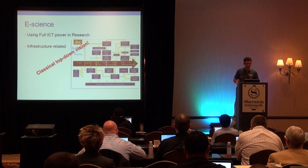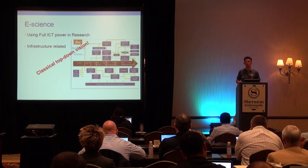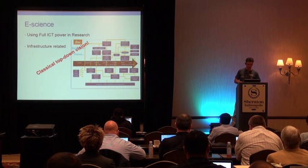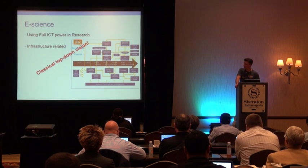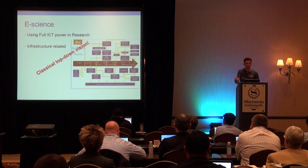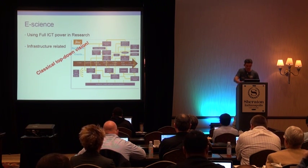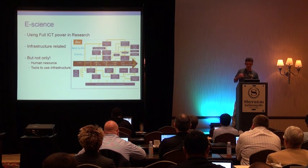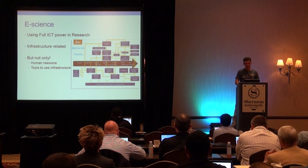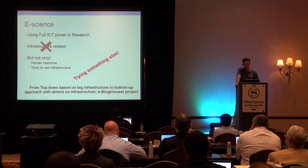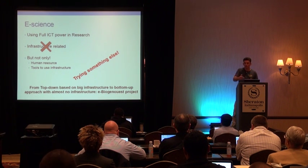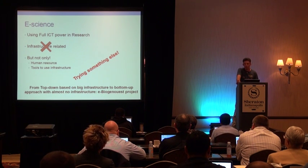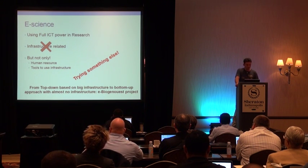So what is e-science? Really briefly, we can say it's the use of full ICT supporting research. What we see is that in Europe and all over the world, e-science approaches were used based on infrastructure - strongly related to big infrastructure in international contexts. This is a classical top-down vision. But it's not only infrastructure; this is also human resources and tools to use infrastructures. For us, three years ago, we were saying infrastructure doesn't matter, because if you want computing or storage you can buy it from Amazon or something like that. We don't have specific needs or specific skills to do this. The really important things are the tools you are using and the people you have to use these tools.